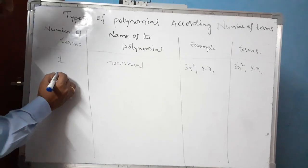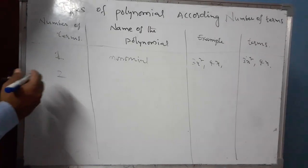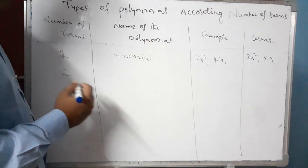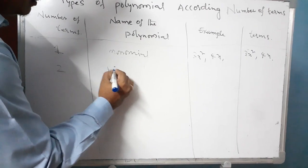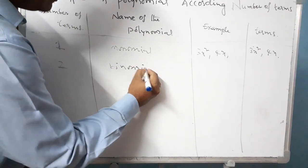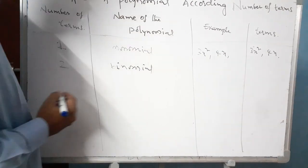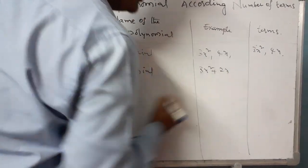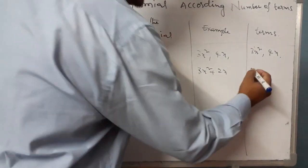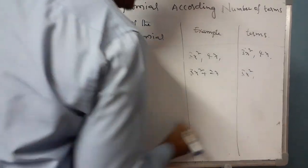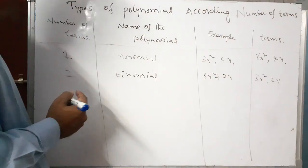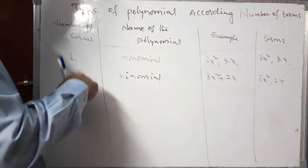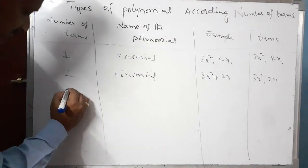If the number of terms is 2, it is called a binomial. Example: 3x squared plus 2x. In this expression we have two terms: 3x squared is one term and 2x is another term. So if a polynomial has two terms, it is called a binomial.